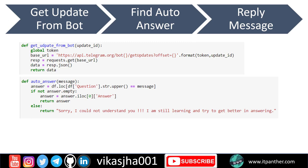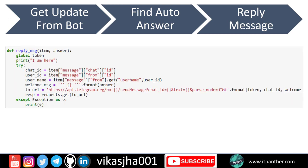Next thing we want to do is reply to the message. To recap: we are getting updates from the bot to check whether any new message has been received, then we find the answer for those messages, and then we reply to the message. The code for replying is pretty self-explanatory if you have watched my previous videos where I showed how to send a reply using Telegram APIs.